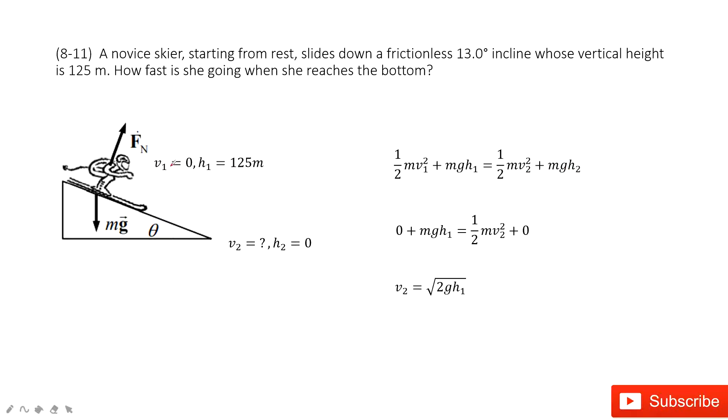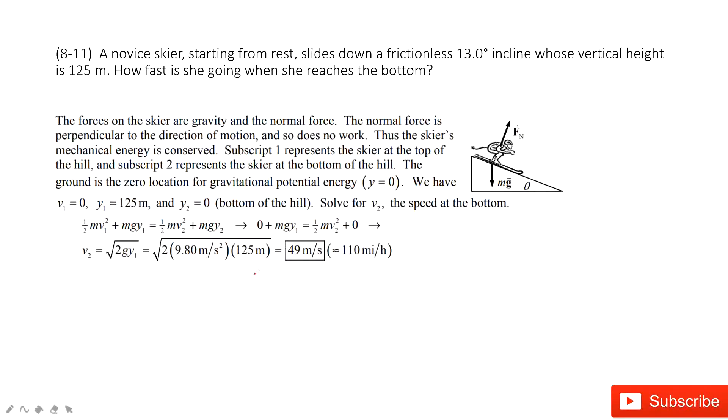As there, we know the v1, h1 and h2. So we input them inside. We can find the v2 very easily in square root 2gh1. And then we can input the quantity inside. It is 49 m per second.